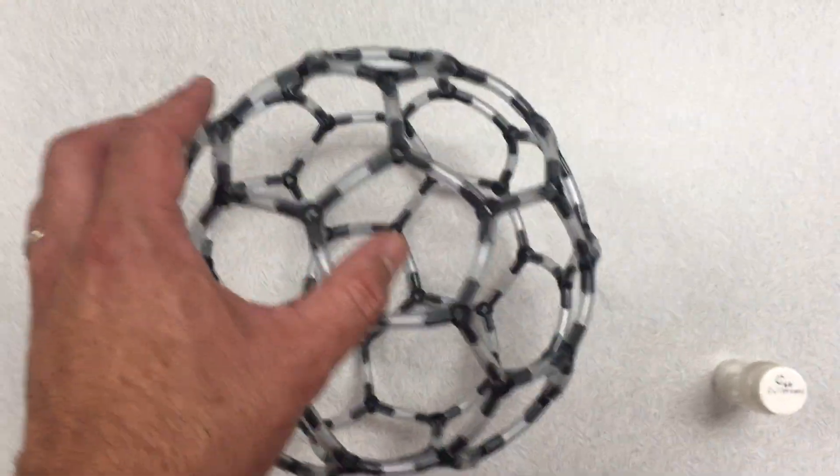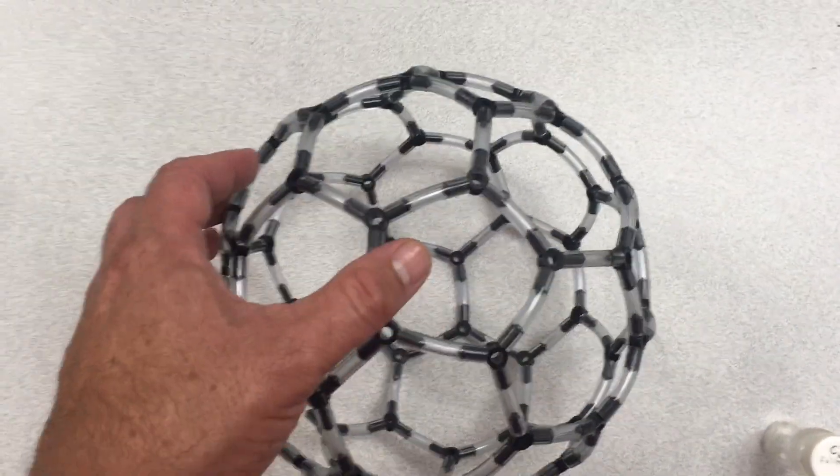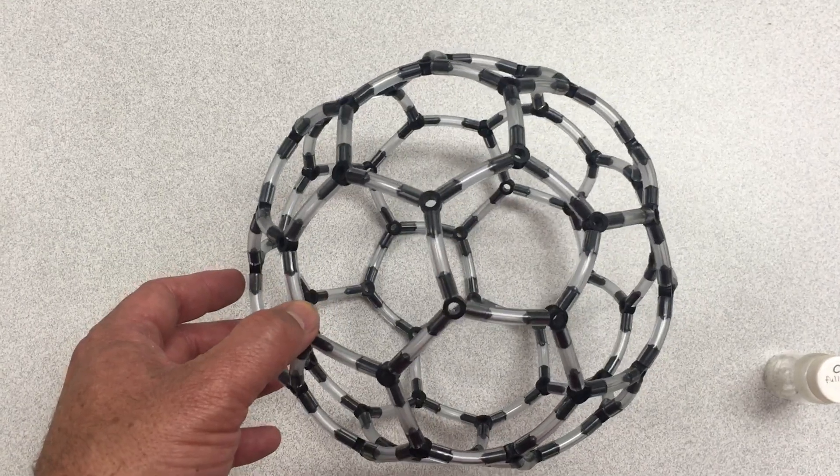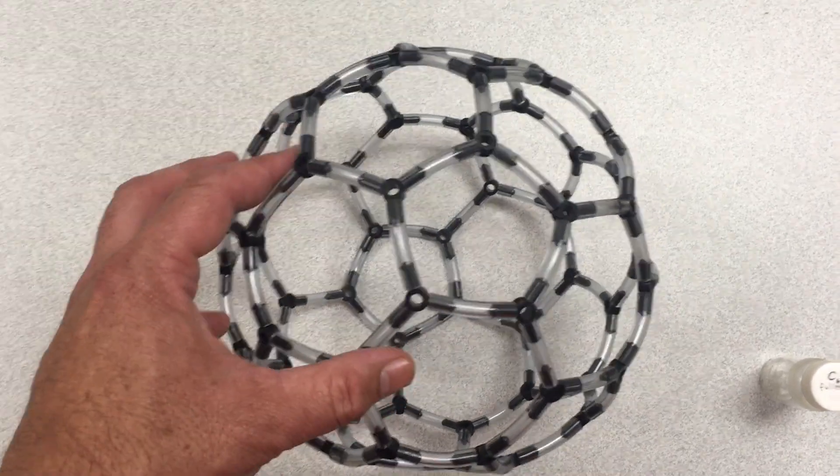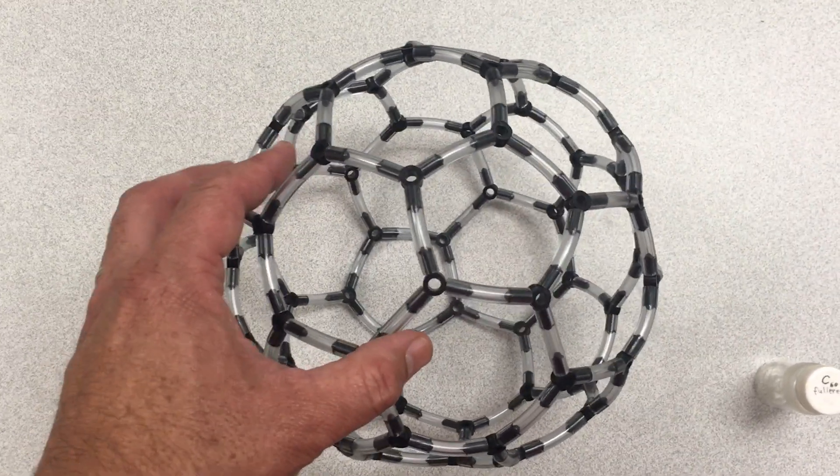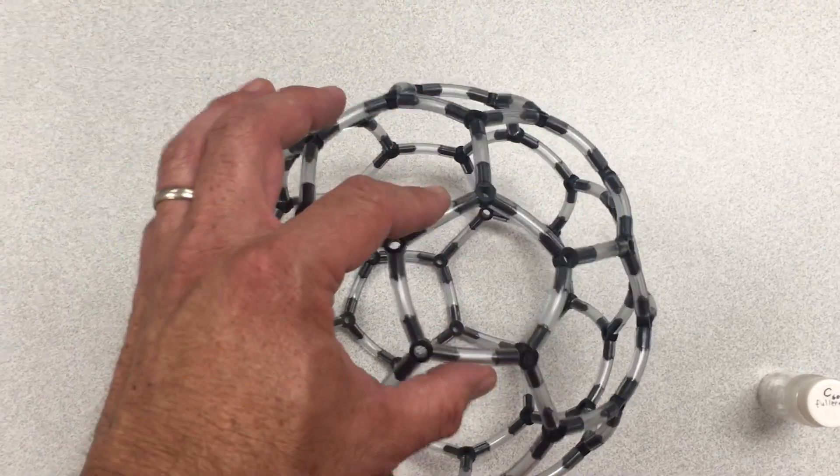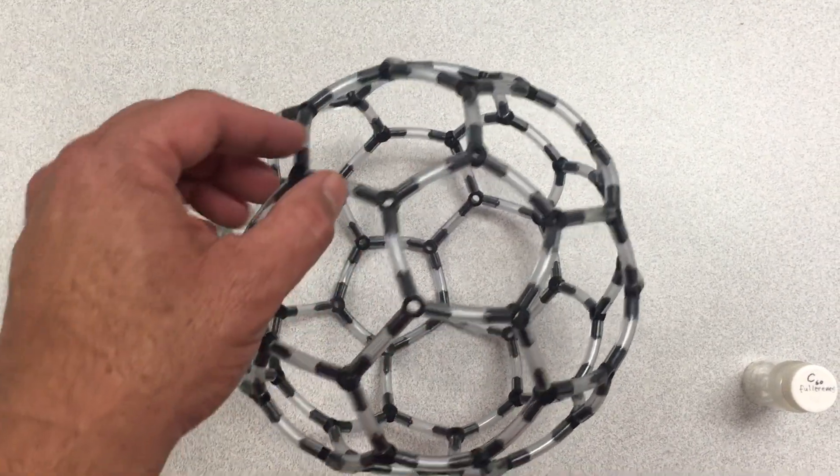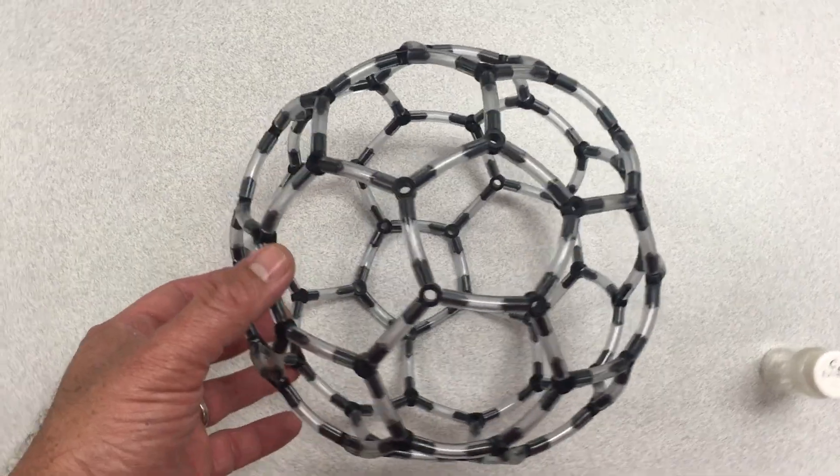So one of the ways you could think about this is sort of like taking a sheet of graphene and sort of rolling it up into a ball. But in the process of making the ball, there are some five-membered rings in addition to the six-membered rings.